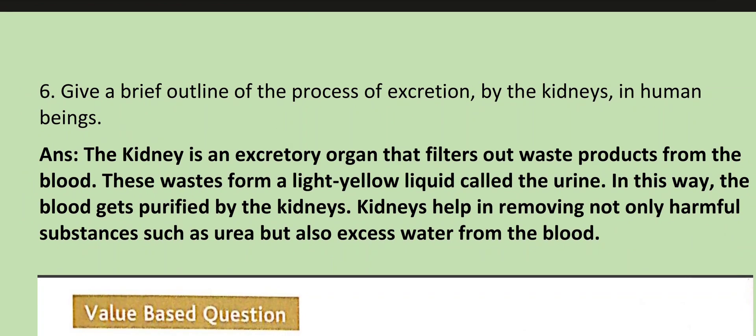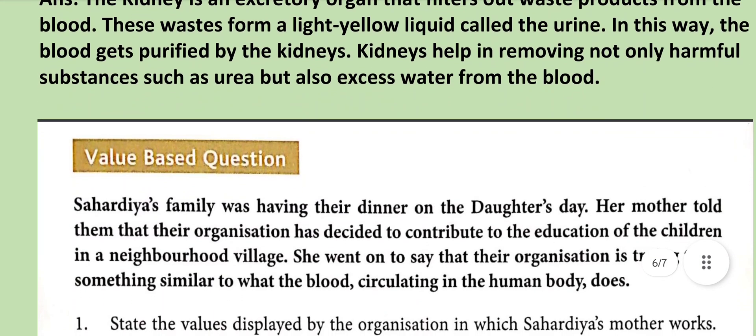Give a brief outline of the process of excretion by the kidneys. The kidney is an excretory organ that filters out waste products from the blood. These waste products form a light yellow liquid called urine. In this way, blood gets purified by the kidneys, which remove not only harmful substances such as urea but also excess water from the blood.